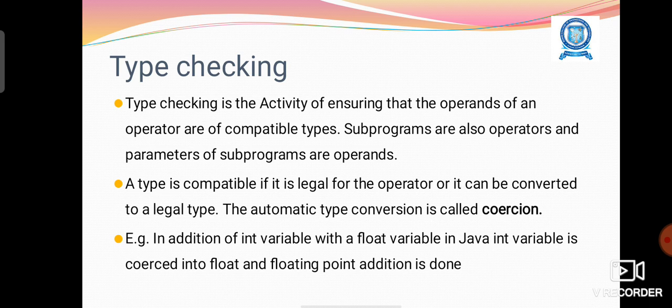A type is compatible if it is legal for the operator or it can be converted to a legal type. The automatic type conversion is called coercion.